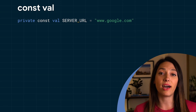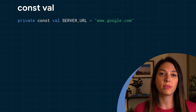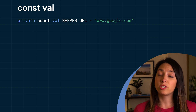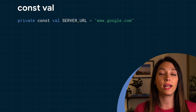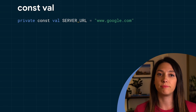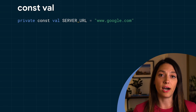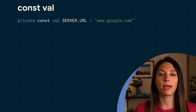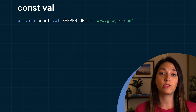These values need to satisfy a series of constraints: they should be top-level properties or members of an object class or of a companion object; they have to be a primitive type or a string; and finally, they're not allowed to have a custom getter.